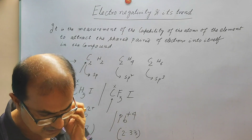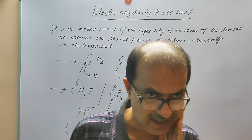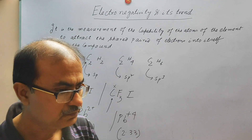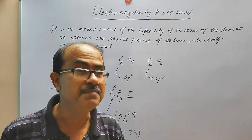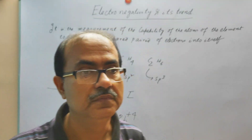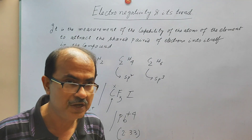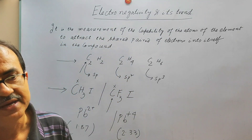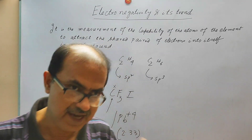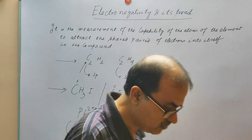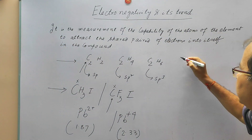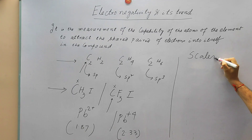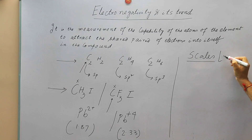So electronegativity cannot be measured very easily — that is very clear from this discussion. The question is: is there any method to measure the electronegativity of the element? The answer is yes. There are basically three scales to measure the electronegativity.